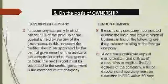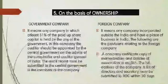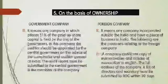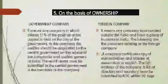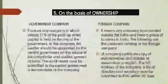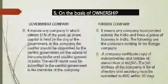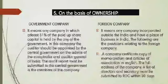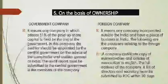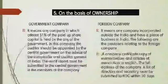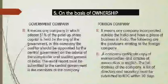The next classification is based on ownership, classified into four types. Number one is government company — one in which 51% of the share capital is held by the state, central government, or both. Number two is foreign company — registered in a foreign country but having a branch or place of business in India. They are also called MNCs. Foreign companies must follow a number of procedures to operate in our country.